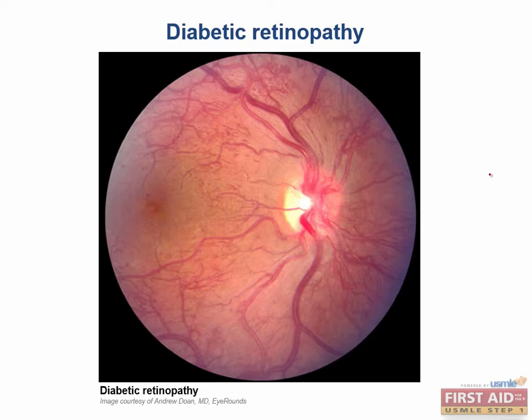Patients with diabetes are prone to developing a number of different secondary manifestations. One of the jokes in medical school was if you have a very complicated case and you can't figure out what it is, you can always say diabetes, cancer, and maybe sometimes lupus, and you can figure out a way to make the symptoms make sense.